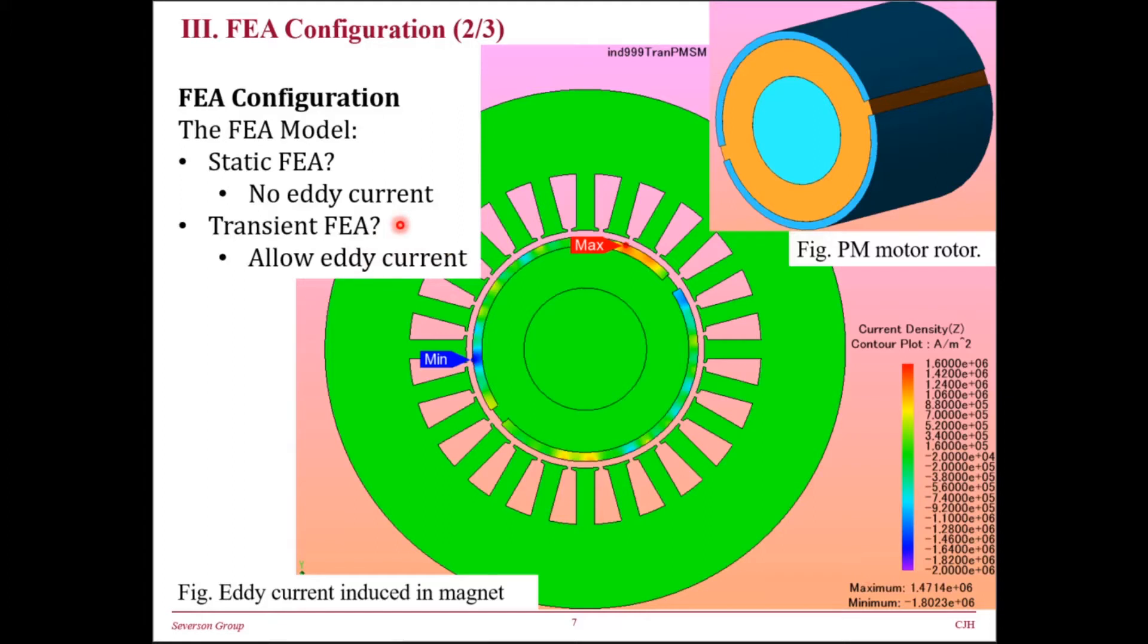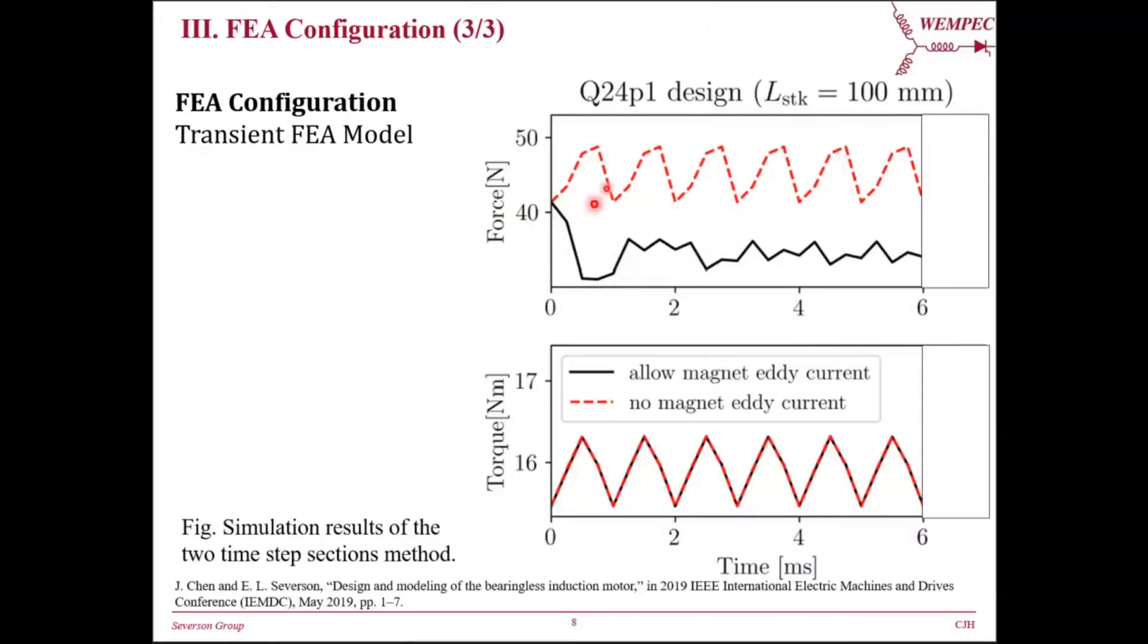This phenomenon might affect suspension force performance and operating efficiency calculations. These are typical suspension force waveforms obtained in an expedited transient FEA with large time step size. Two cases are considered. The red trace corresponds to the case of no magnetic eddy current, and we can see there is almost no transient in the force profile, while the black curve corresponds to the case of allowing magnetic eddy current, and there is notable transient in the force profile. Note that the steady state values between these two cases are remarkably different. In conclusion, the magnet eddy current is bad for suspension.